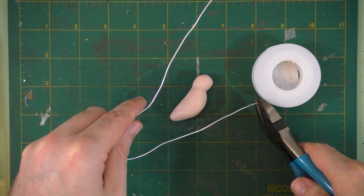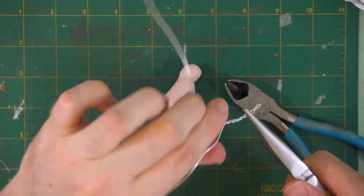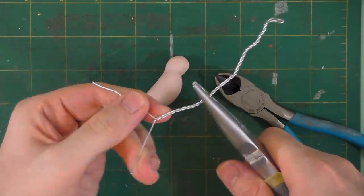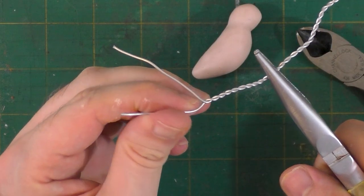Next I'm bending some fine gauge armature in half and braiding it together, but I'm being careful to leave a little extra wire on both ends untwisted. This is so important! This is how we're gonna make our bird's feet!